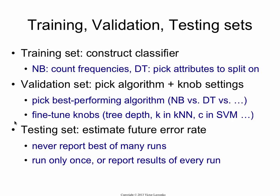You get a number, and that number is your best estimate of what is going to happen in the future. Typically, the test error is going to be higher than the validation error, which is going to be higher than the training error. It's easy to overfit on the training set; on the validation set the knob overfits; and the testing set, which neither the algorithm nor you have seen before, is your estimate of what's going to happen in the future. The rule is: you only run once on the test set and report that number.